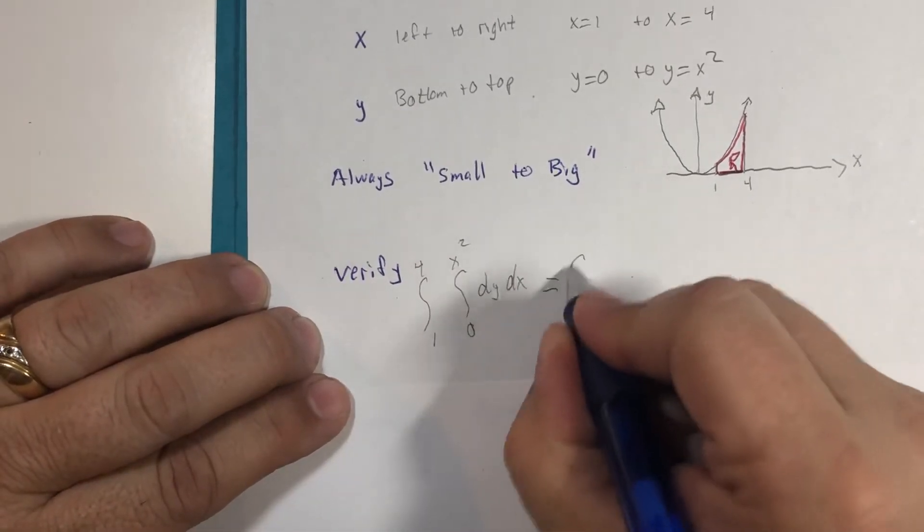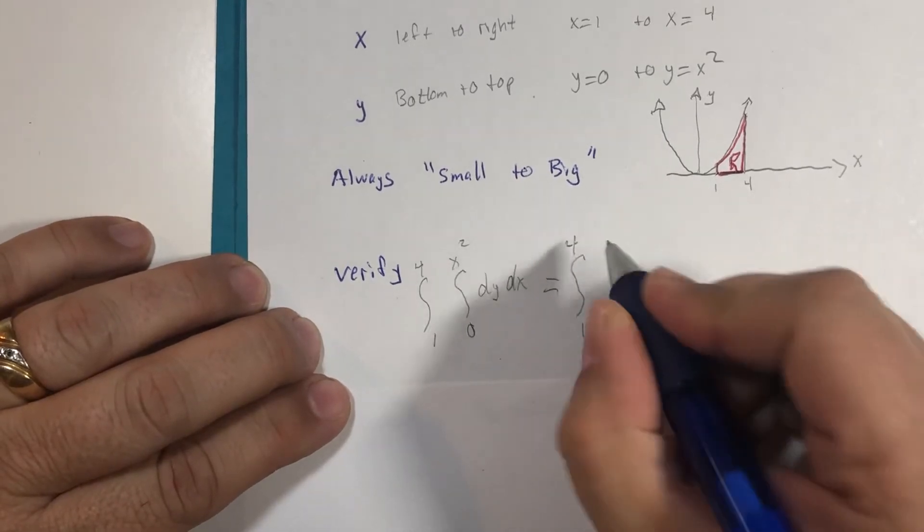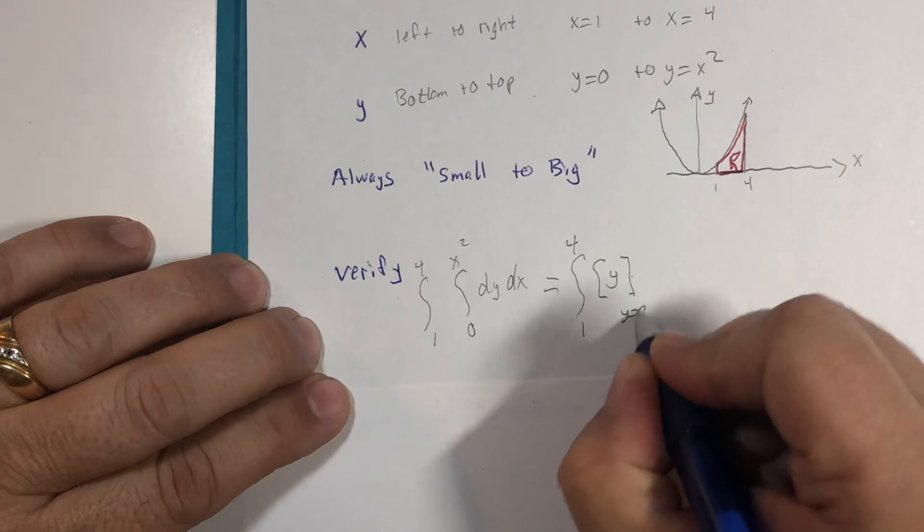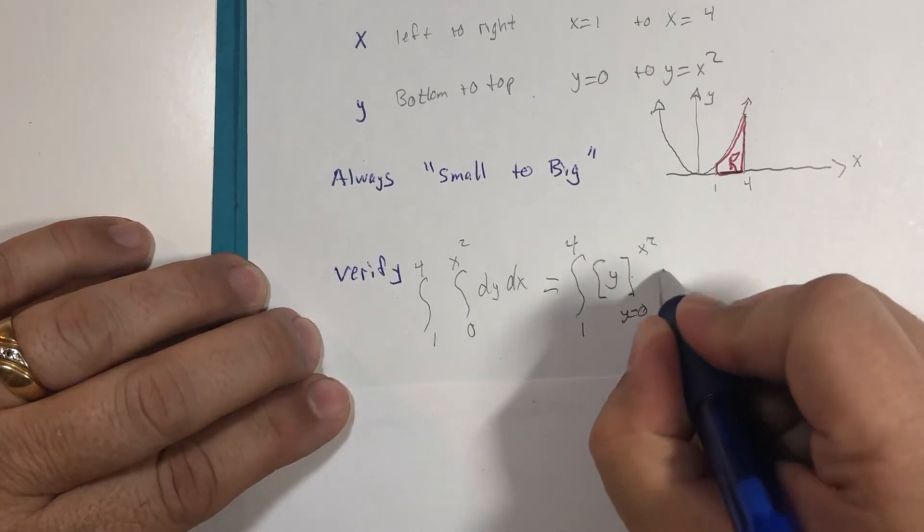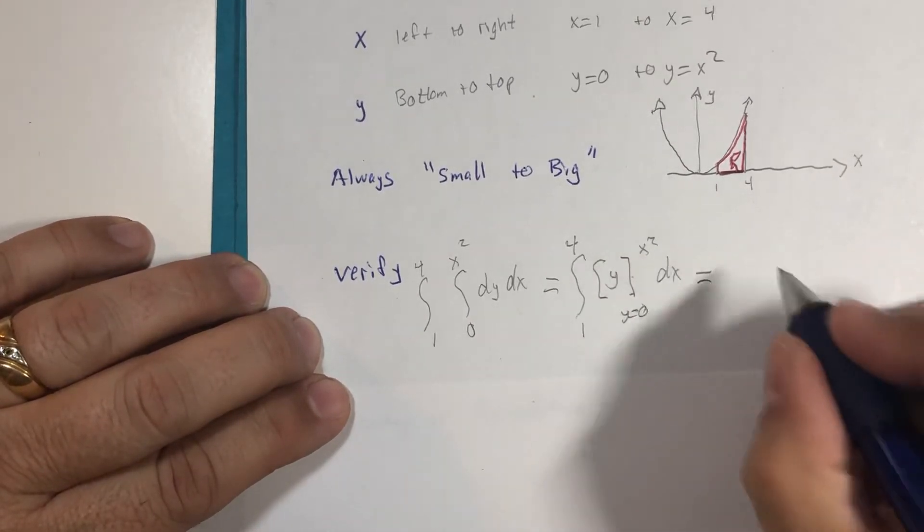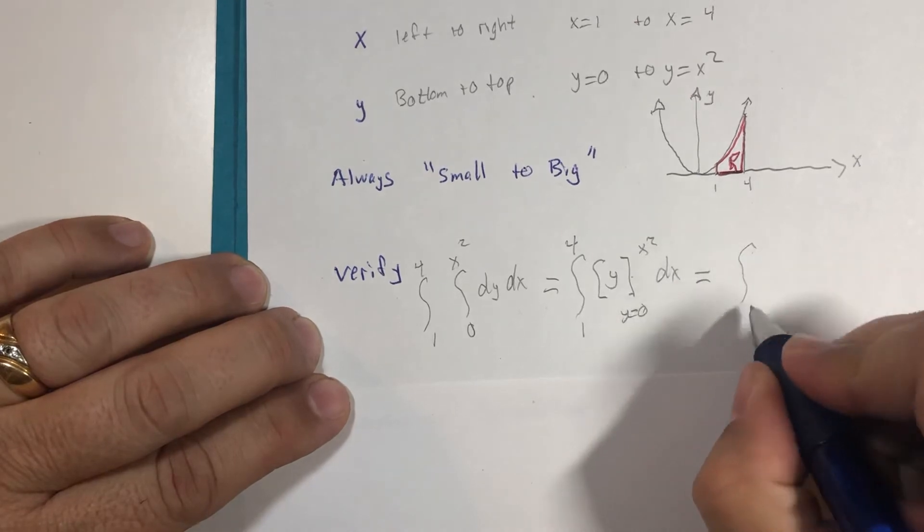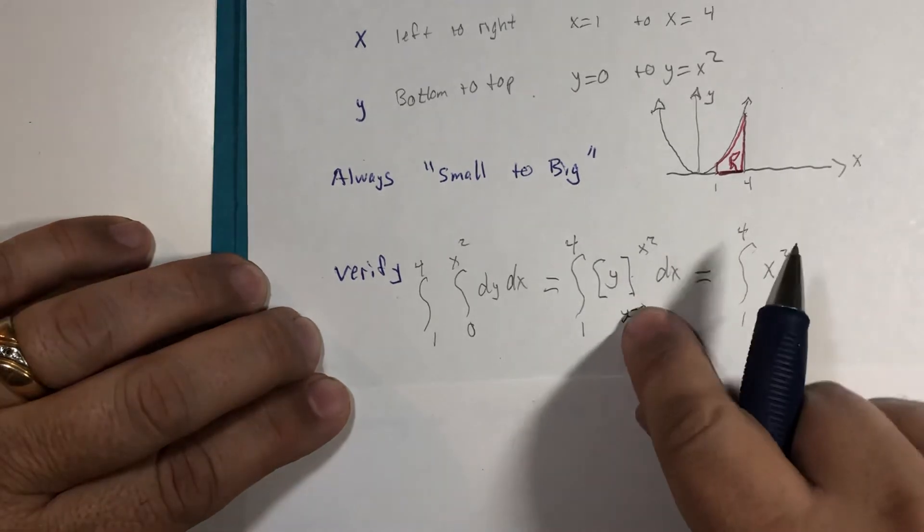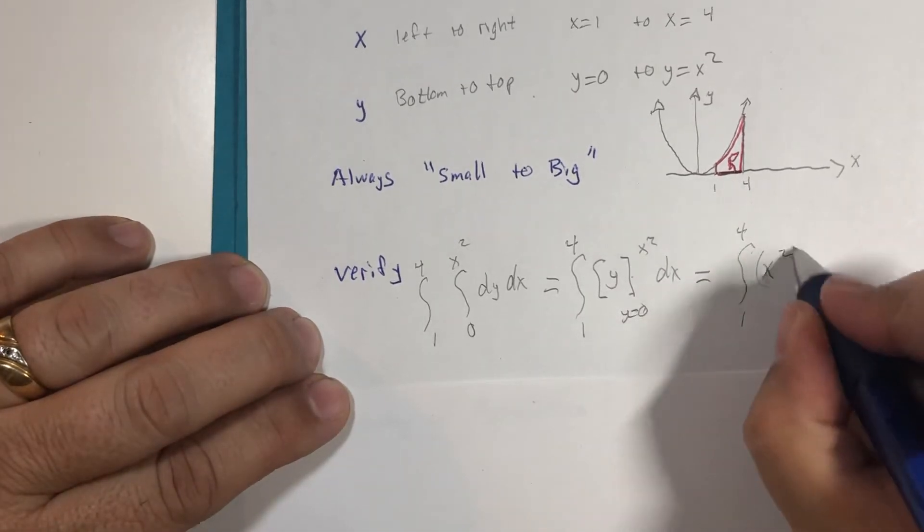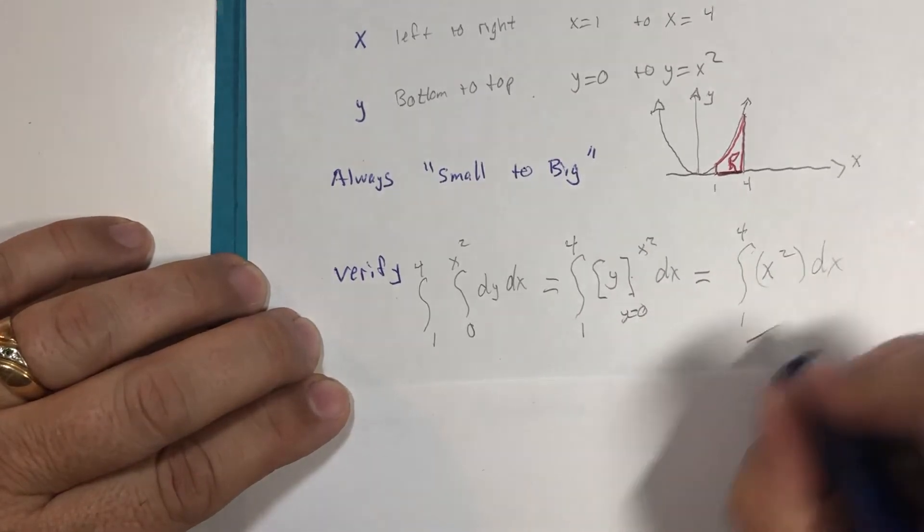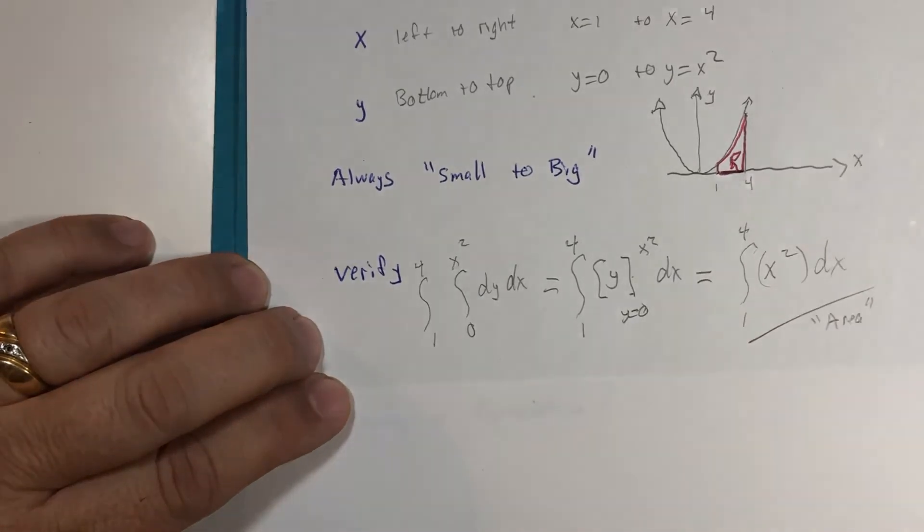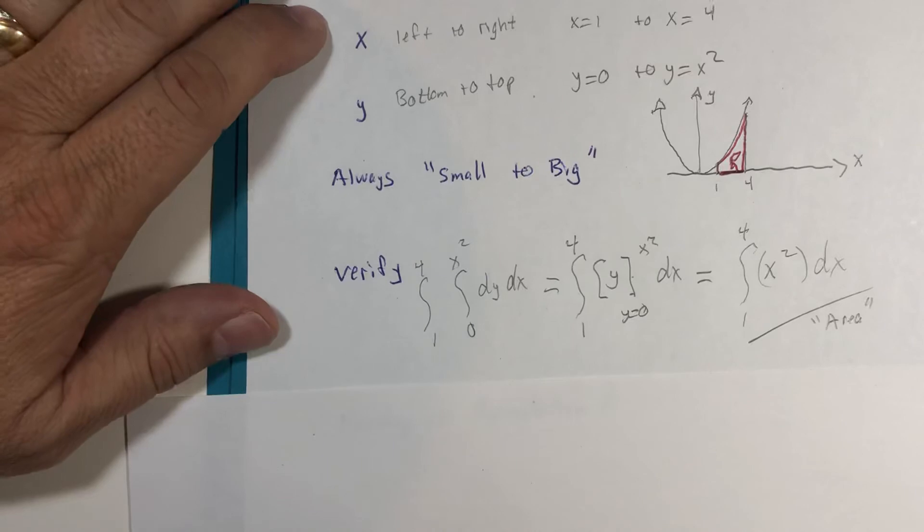And that would be equal to from one to four, the integral of dy is y, y goes from zero to x squared. And that means we're going to have y equals x squared minus y equals zero, which leaves us just this. That's our old area calculation from calc one.